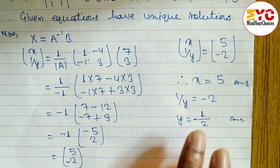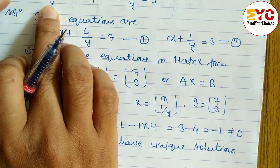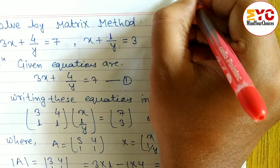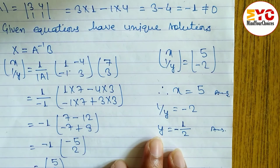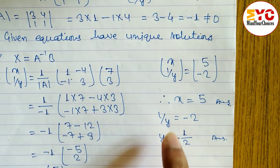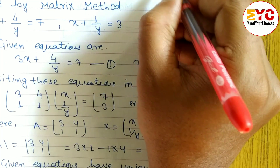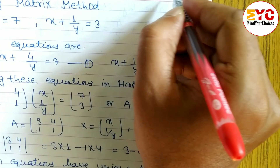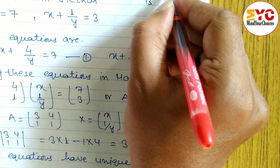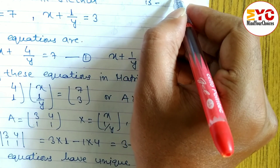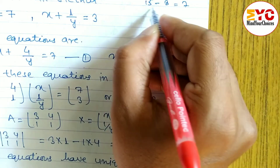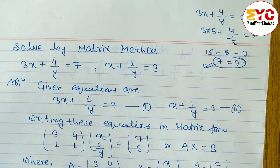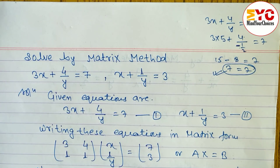Let's verify whether our answer is correct by substituting x = 5 and y = -1/2 into equation 1: 3x + 4/y = 7. We get 3×5 plus 4 divided by (-1/2). That gives 15 plus 4×(-2) which equals 15 minus 8 equals 7. Both sides equal 7, so our answer is 100% correct.